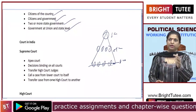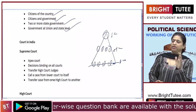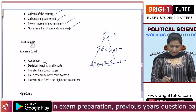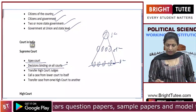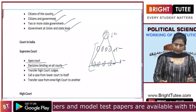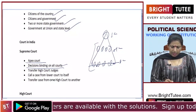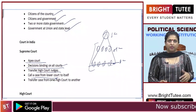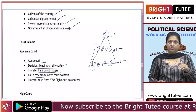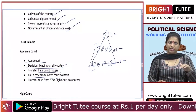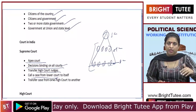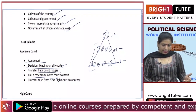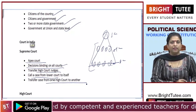There is one Supreme Court in the entire country, and every state has one High Court, though two states can share one High Court. The Supreme Court is the apex court — its decisions are binding on all lower courts. The Supreme Court can also transfer High Court judges and can call a case from a lower court to itself, especially when a case involves a substantial question of law or interpretation of the Constitution.